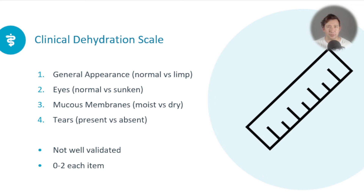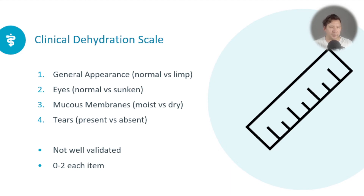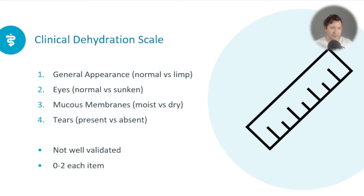This scale was basically devised to break the assessment of dehydration down into four categories. You look at the general appearance — whether the child's normal or limp — you look at their eyes to see if they're normal or sunken, if the mucous membranes are moist or dry, and if tears when they cry are present versus absent. Each thing can be scored either zero, one, or two, with higher scores being worse. You put the scores together and come up with an output to say whether the child's dehydrated.